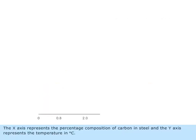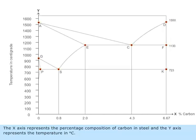The x-axis represents the percentage composition of carbon in steel, and the y-axis represents the temperature in degrees centigrade.